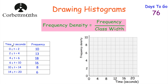If we have a look here, we've got 0 to 2 seconds, 2 to 4, 4 to 6, 6 to 10, 10 to 14, and 14 to 20. The class widths for 0–2, 2–4, and 4–6 are each 2 seconds. But from 6 to 10 the class width is 4 seconds, and the last group is even 6 seconds wide.